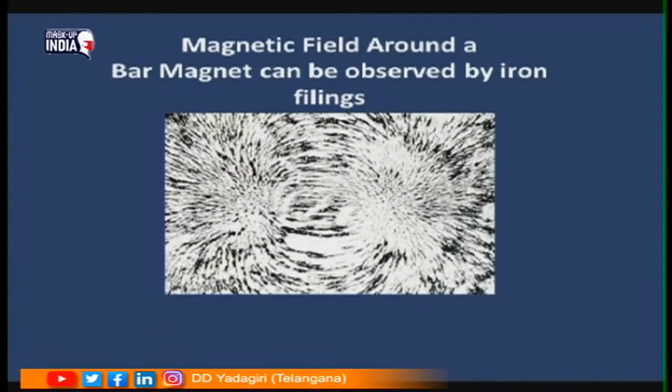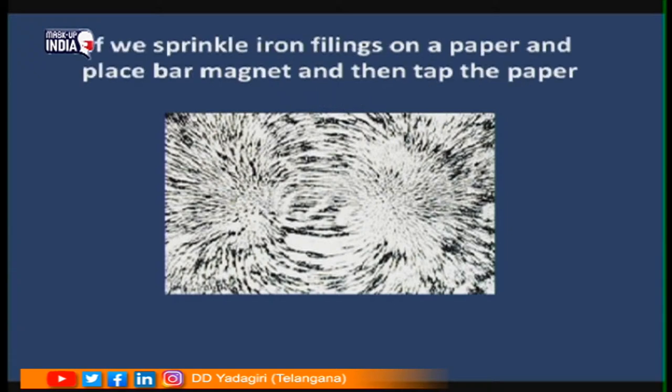We can also draw the magnetic field around the bar magnet by using a compass, or by taking a sheet of paper, placing a bar magnet on it, sprinkling iron filings over the paper, and slowly tapping it. The iron filings will arrange themselves in the form of the magnetic field lines around the bar magnet.